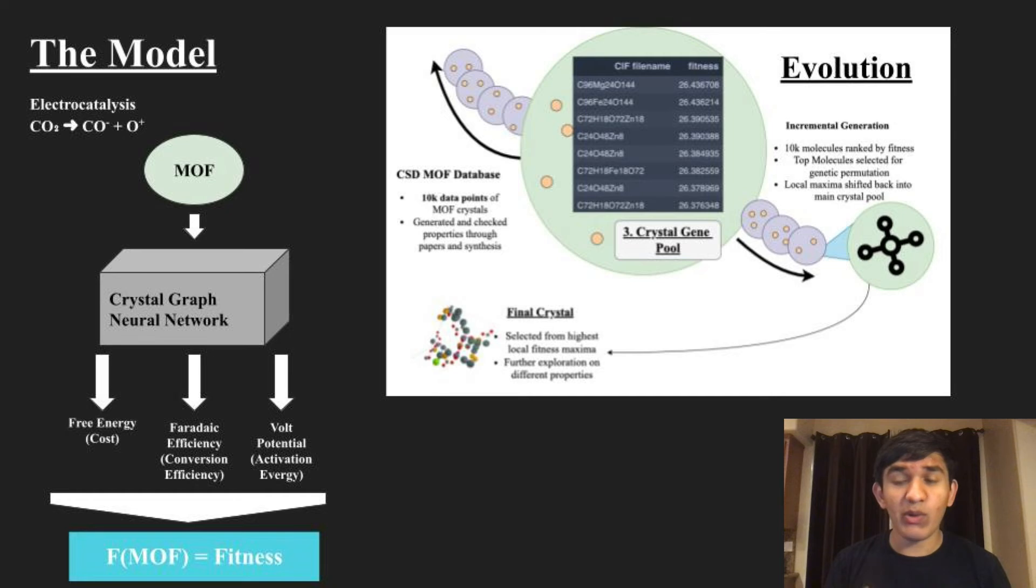To solve this, I developed a model that works well with low amounts of data, an active transfer learning evolution model. First, I run the data I hand collected through a crystal graph neural network to predict the three properties, and combine them into a fitness function.